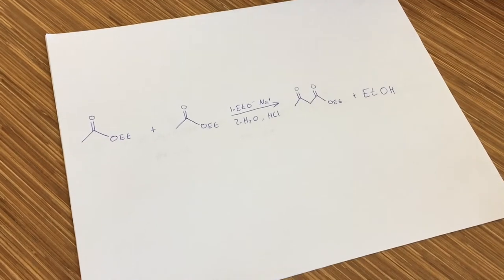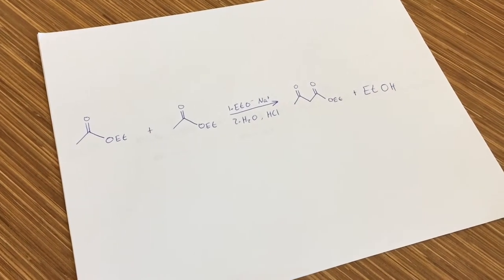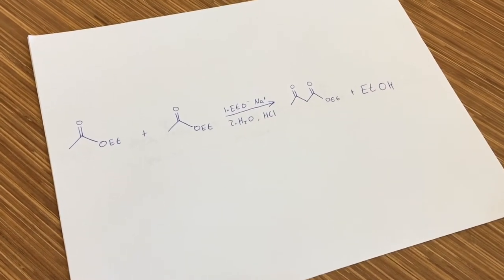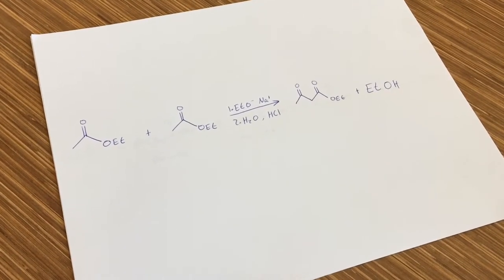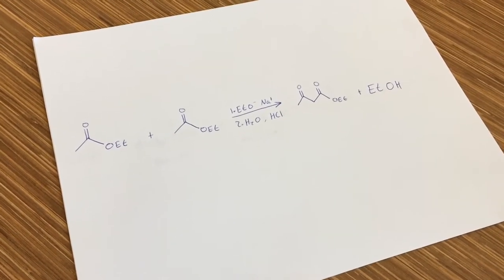A successful Claisen condensation requires an ester with two alpha hydrogens, one to form the initial enolate anion and the second to form the enolate anion of the resulting beta-ketoester.